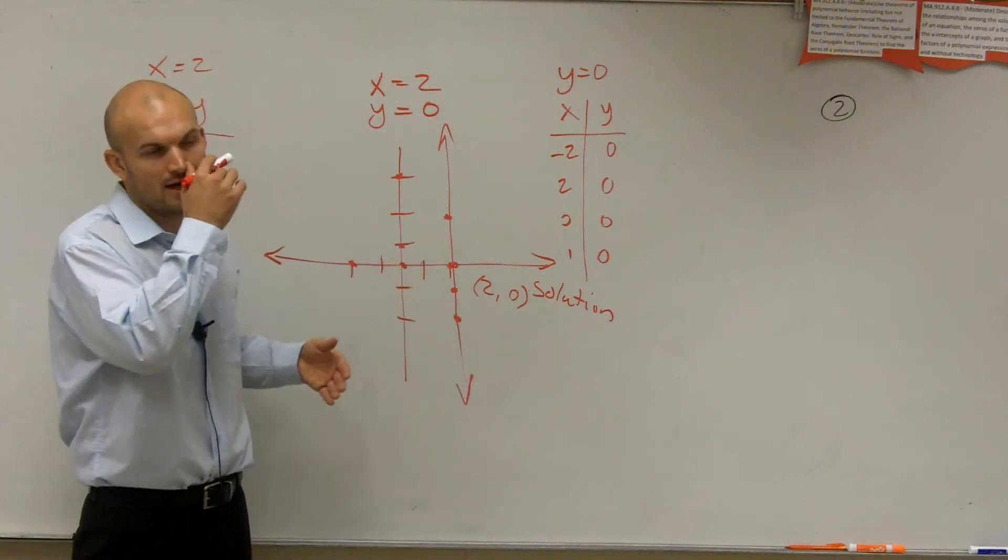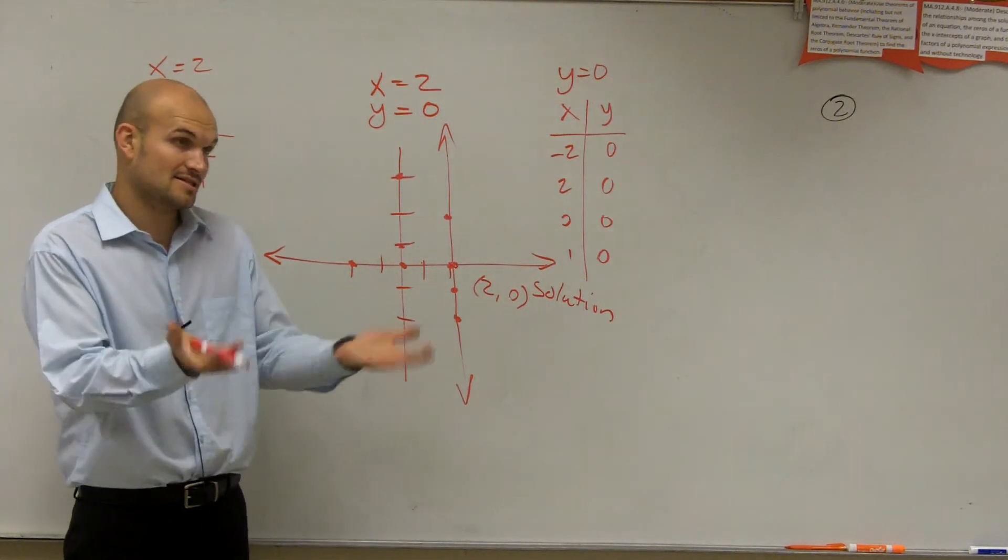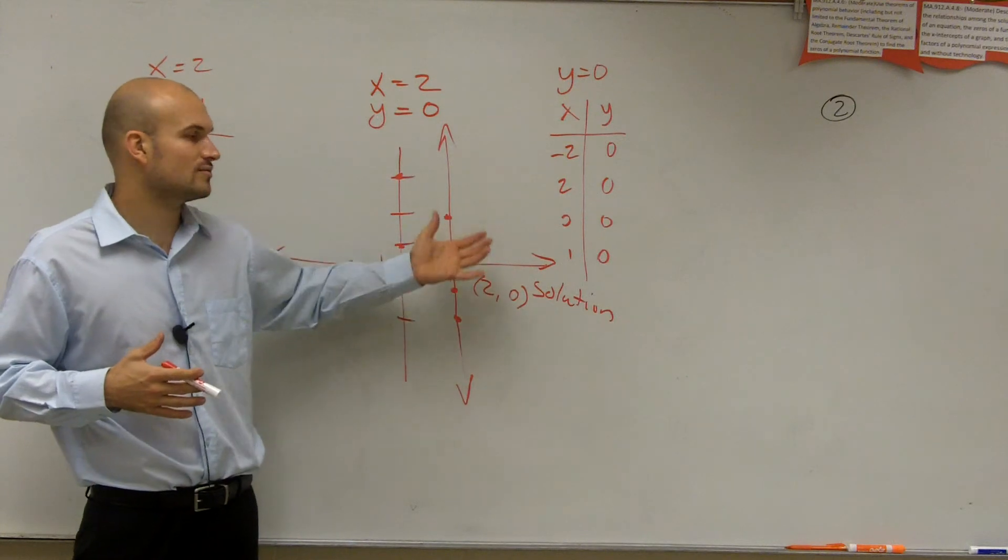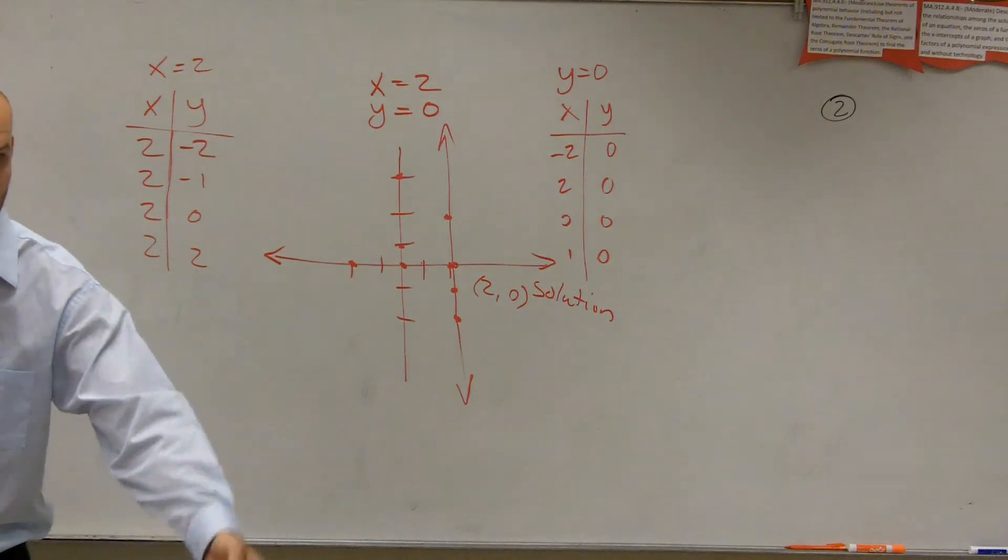So that's when you'd have a dependent solution. Dependent, consistent solution. Because it has a solution, so it's consistent. But since there's infinite many solutions, it is dependent. That is an independent, consistent solution.